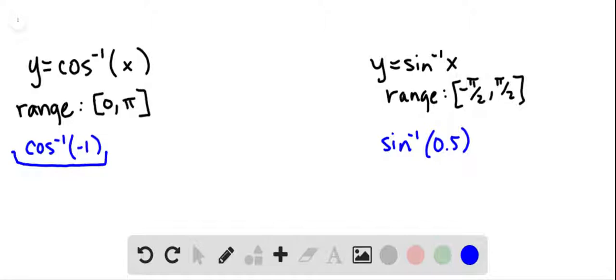When you look at this expression, inverse cosine of negative 1, here's what you want to think. It's asking you to find the angle whose cosine is negative 1.